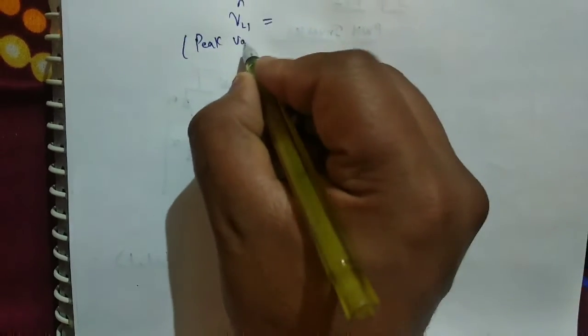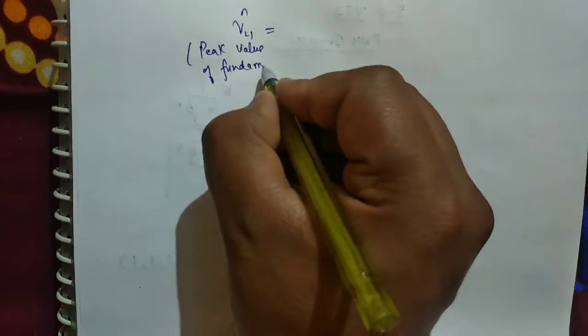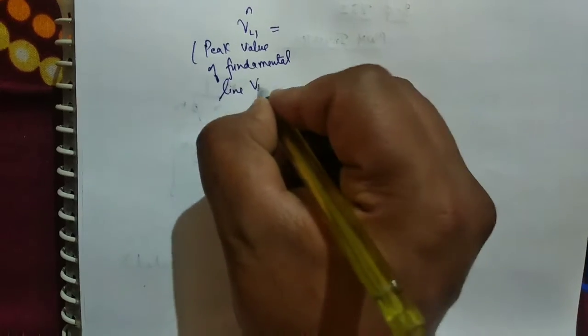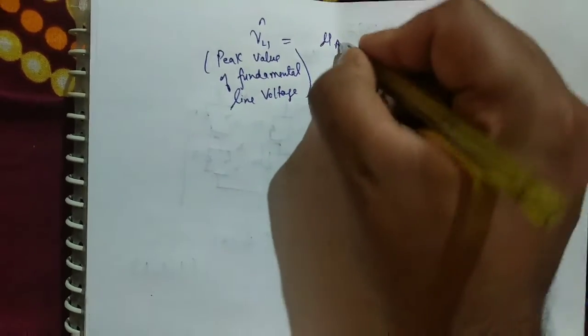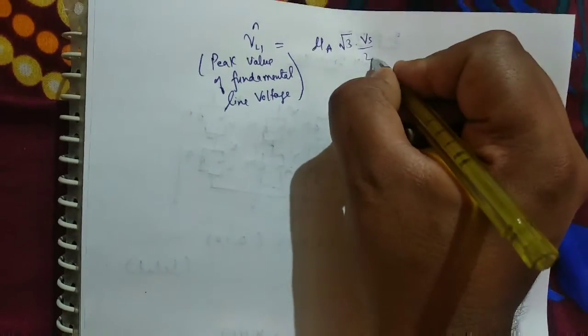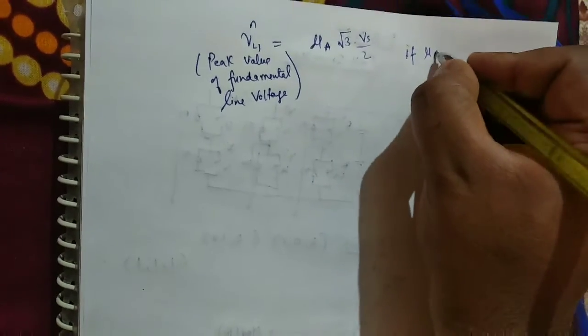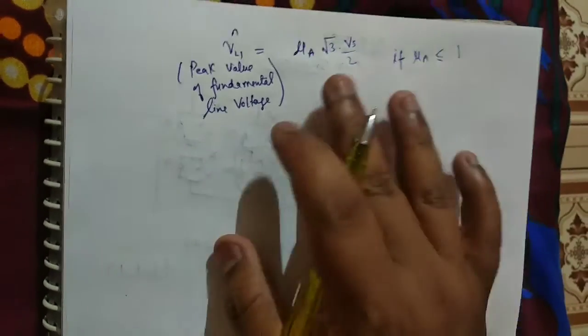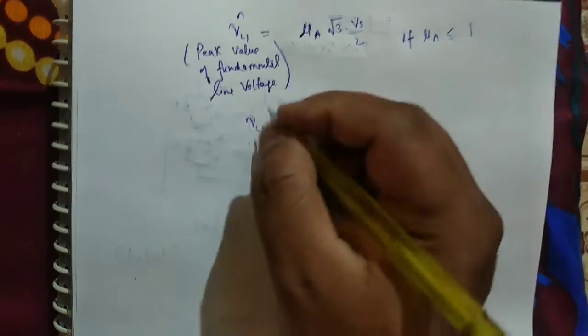Now what is line voltage peak? That is peak value of fundamental line voltage. It is μ_A or M_A times √3 V_S by 2.